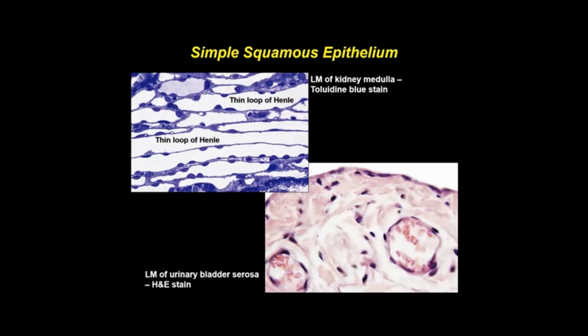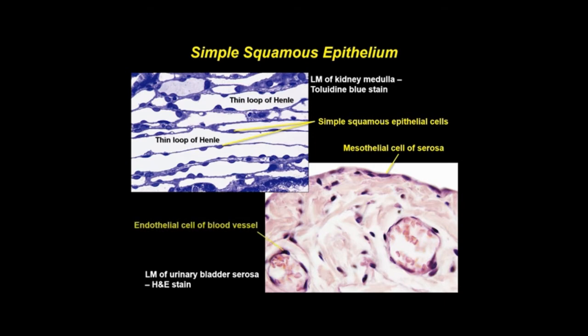Mesothelium can be seen lining the thin loops of Henle in the kidney, or on the outer surface of organs where it is known as mesothelium, and lining the vasculature where it is referred to as endothelium.